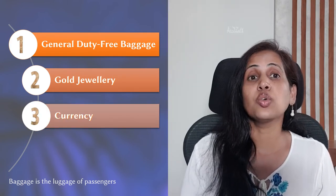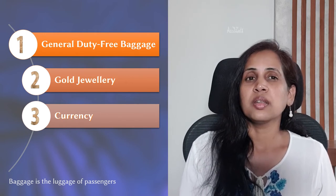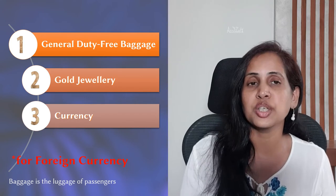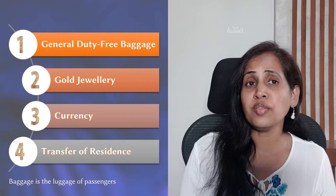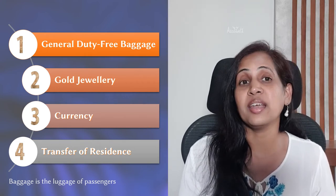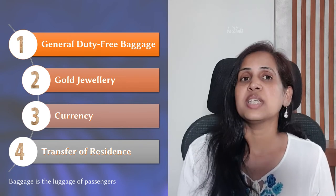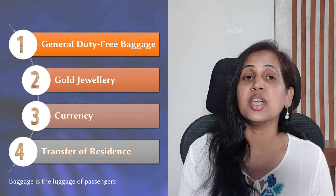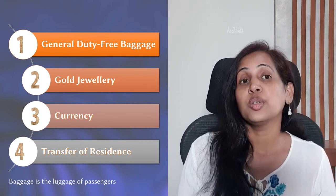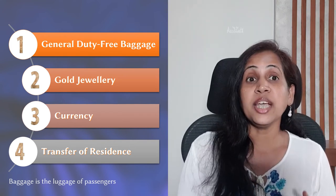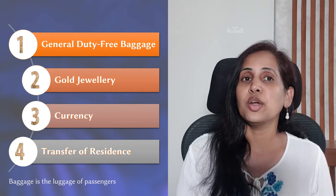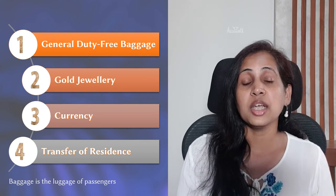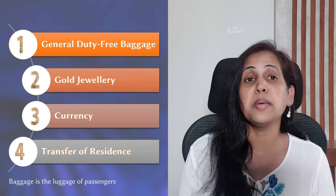Third, we have currency — this would include both foreign currency and Indian currency. There is no threshold limit as such similar to the first two heads, but if you cross a certain limit, you would be required to make a declaration in the customs declaration form. Fourth, transfer of residence — if you are a professional or had taken up employment in a foreign country and later decided to move back to India, this is transfer of residence for you. This rule is about duty free allowance on personal or household items you had while staying in a foreign country. All four heads are independent of each other, and the maximum duty free baggage allowance for you would be the total of the threshold limits in each of these heads.